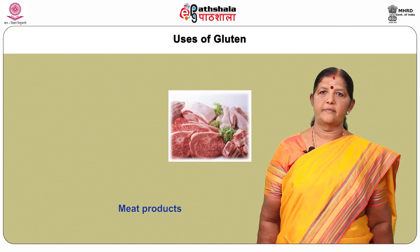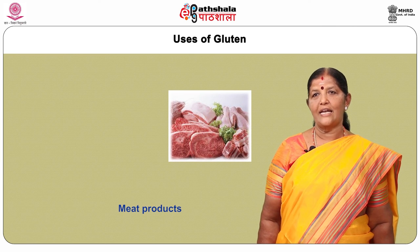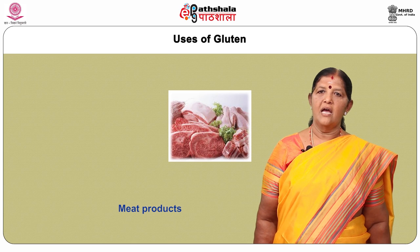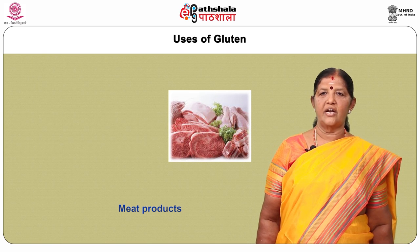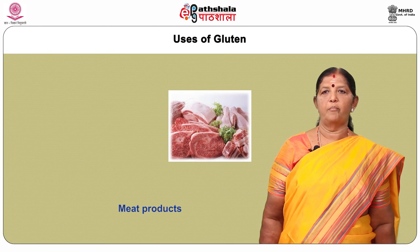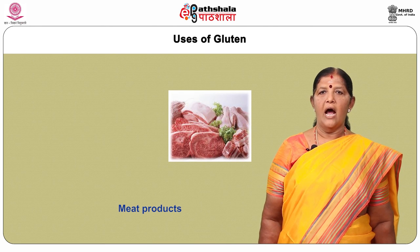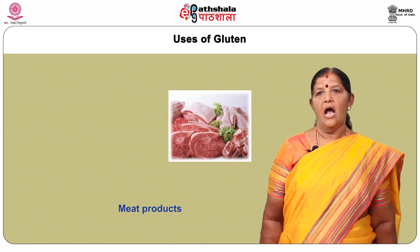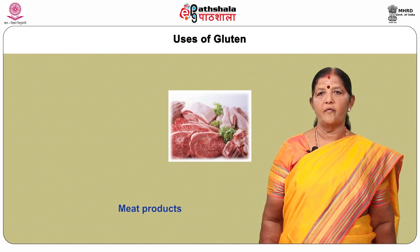Meat products: Gluten is widely used in processed meats as a binding and enriching ingredient. It is used in beef, pork and chicken sausage products and as a common ingredient of pizza toppings.